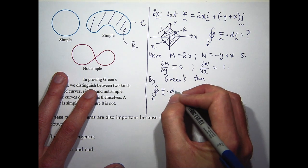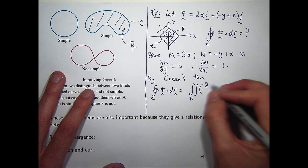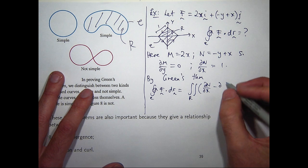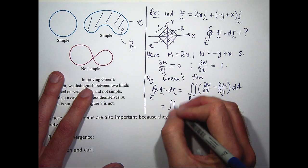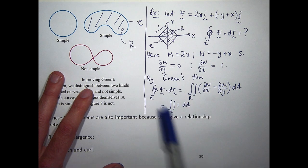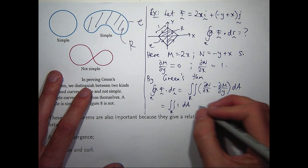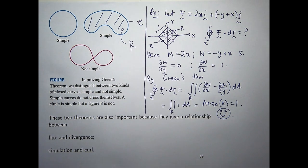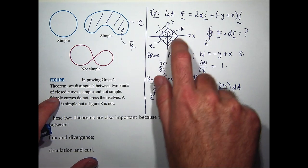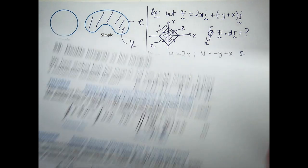By Green's Theorem, this line integral is just the following double integral. Now, this is zero, and this is one. So, what is this then? It's the area of my little square. What's the area of the square? One. So, you can see, hopefully, that it can be a time-saving technique. Why would you parameterize four separate line segments when you can just apply Green's Theorem? So, these two theorems.